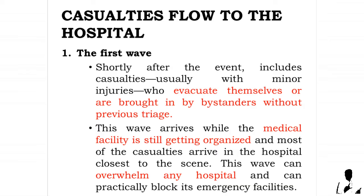Casualties flow to the hospital typically consists of three waves. The first wave occurs shortly after the event and includes casualties usually with minor injuries who evacuate themselves or are brought in by bystanders without previous triage. This wave arrives while the medical facility is still getting organized, and most casualties arrive at the hospital closest to the scene. This wave can overwhelm any hospital and can practically block its emergency facilities.